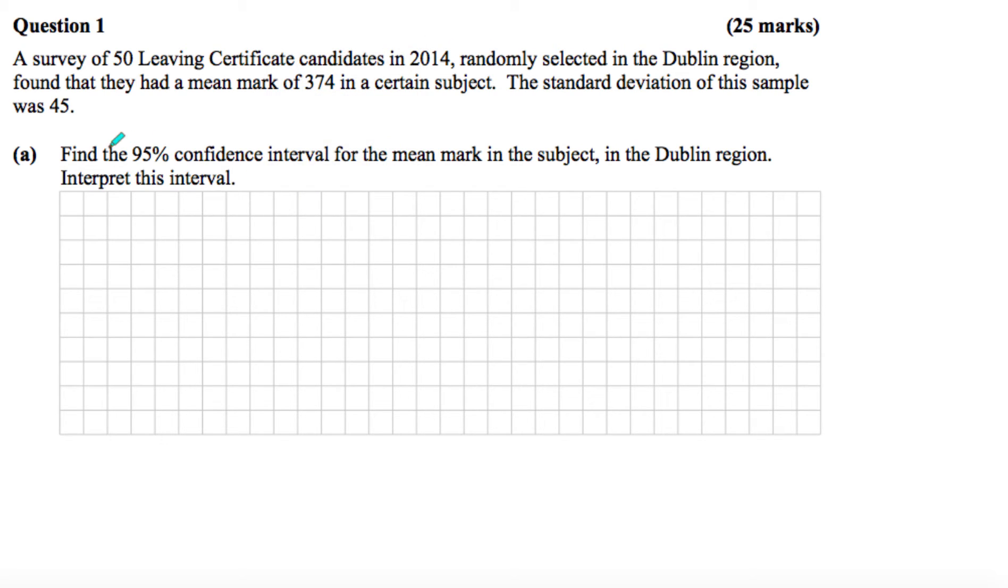So the 95% confidence interval for the mean, if we are trying to find that, there is a formula we use for that, and the formula looks like this. It's x bar, which is the sample mean, plus or minus 1.96 times sigma over root n. This x bar here is the sample mean. The sigma up here is the standard deviation for the population, and the n is the sample size.